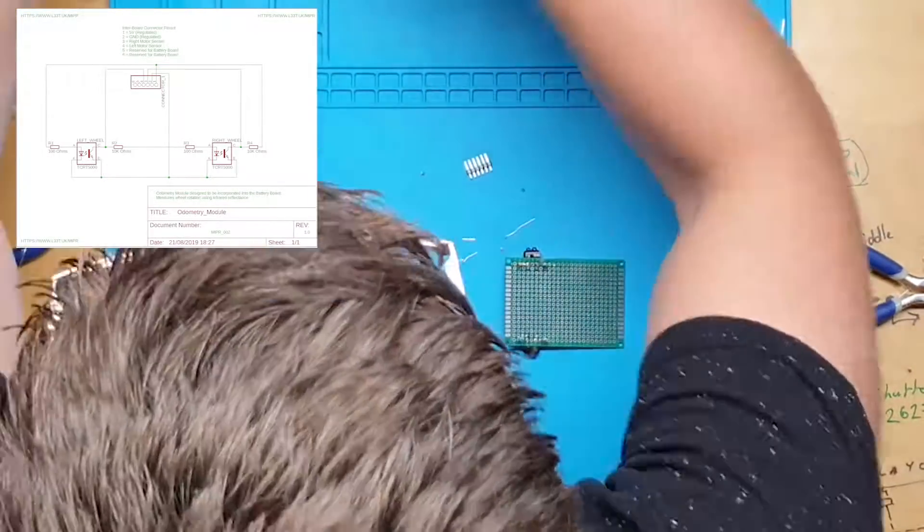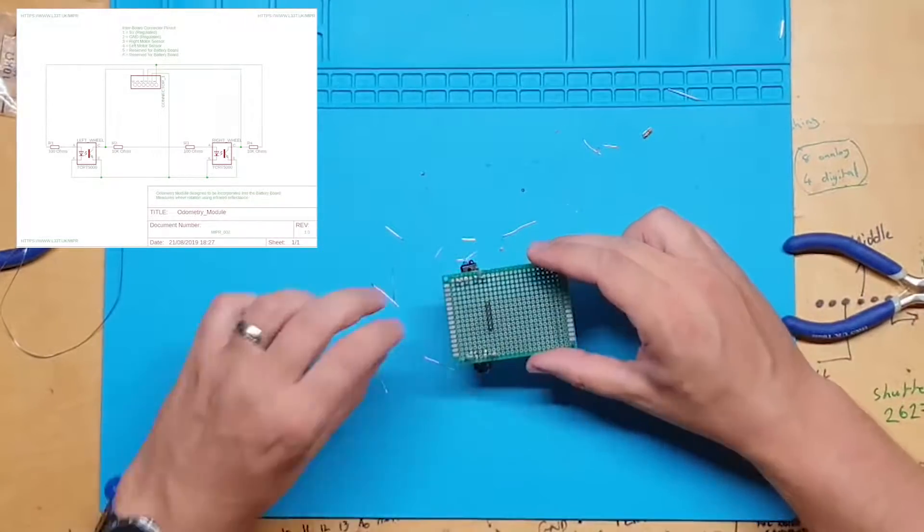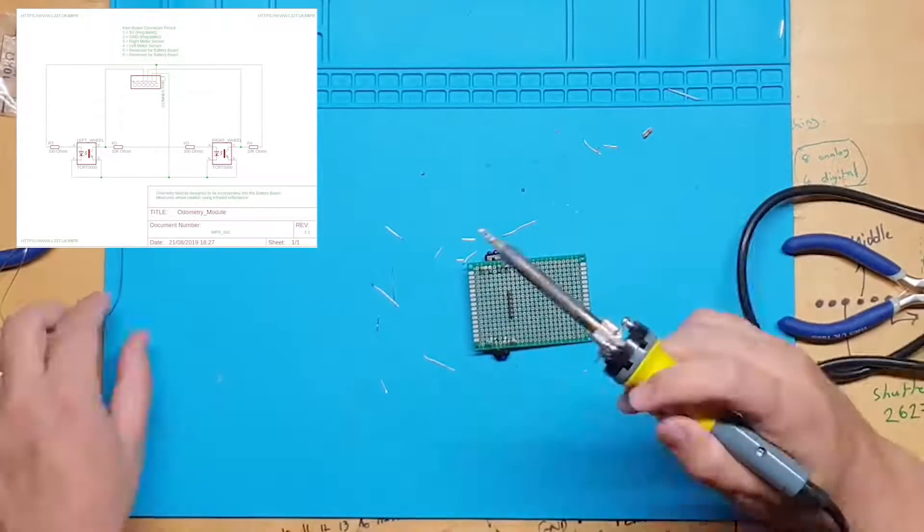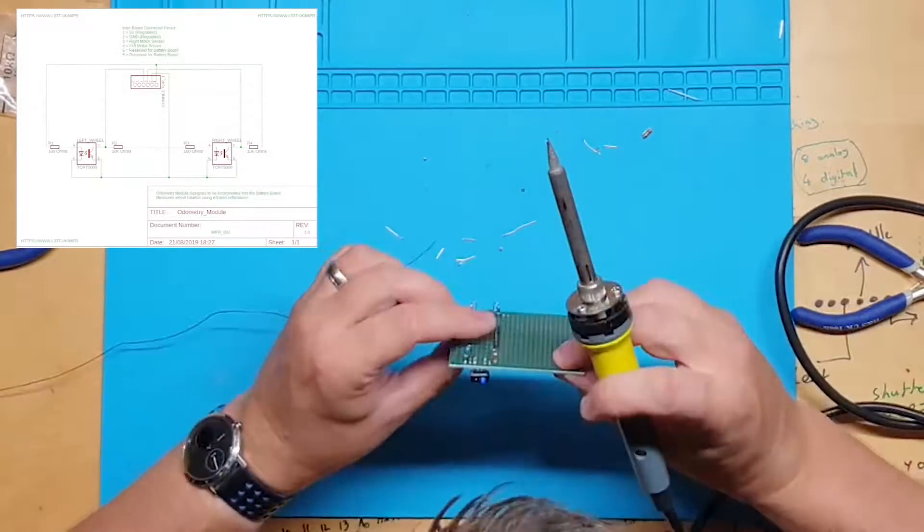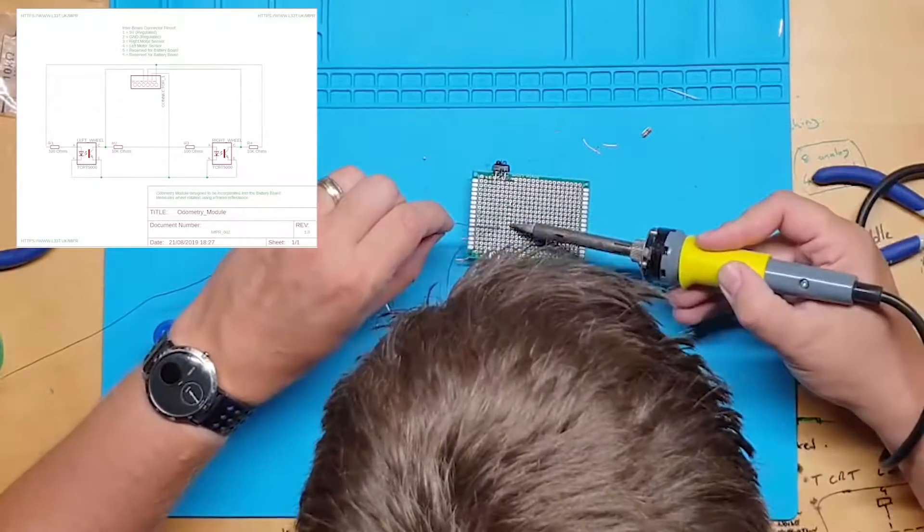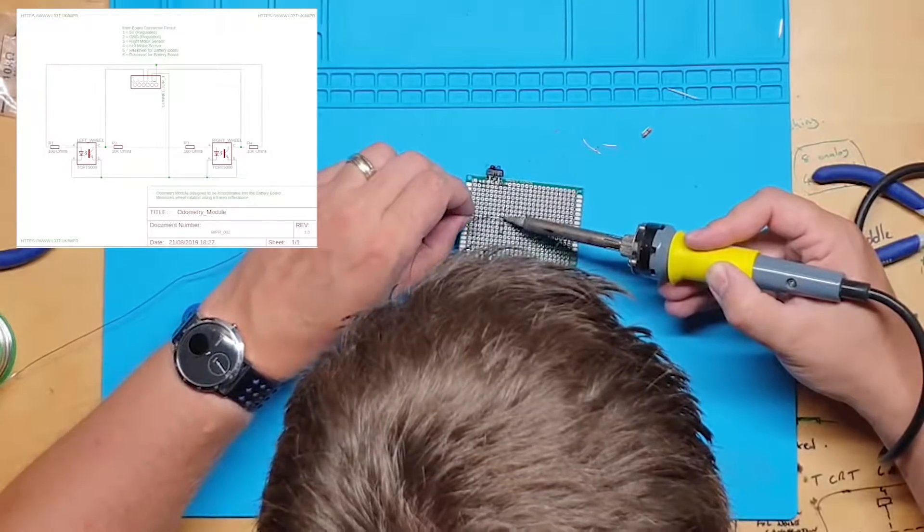I am now adding the interconnect board connector. This will be used to connect this board to the other half of the battery board. We will use this connector when we're setting the odometry module up in the next video. I've put this connector 8 rows from the back of the perf board ensuring that there will be enough room for the battery when we build the battery board.